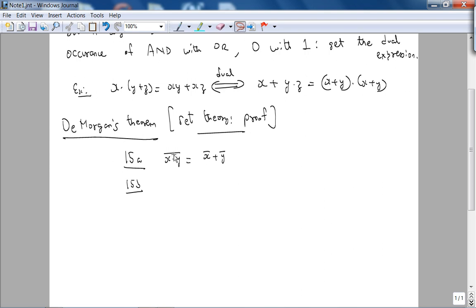So, the De Morgan's Theorem in your book is 15A and 15B. It basically says (x AND y) NOT is the same as x NOT OR y NOT. In other words, you can take this NOT operation and as you distribute it on this variable x here and variable y here, this AND becomes an OR.